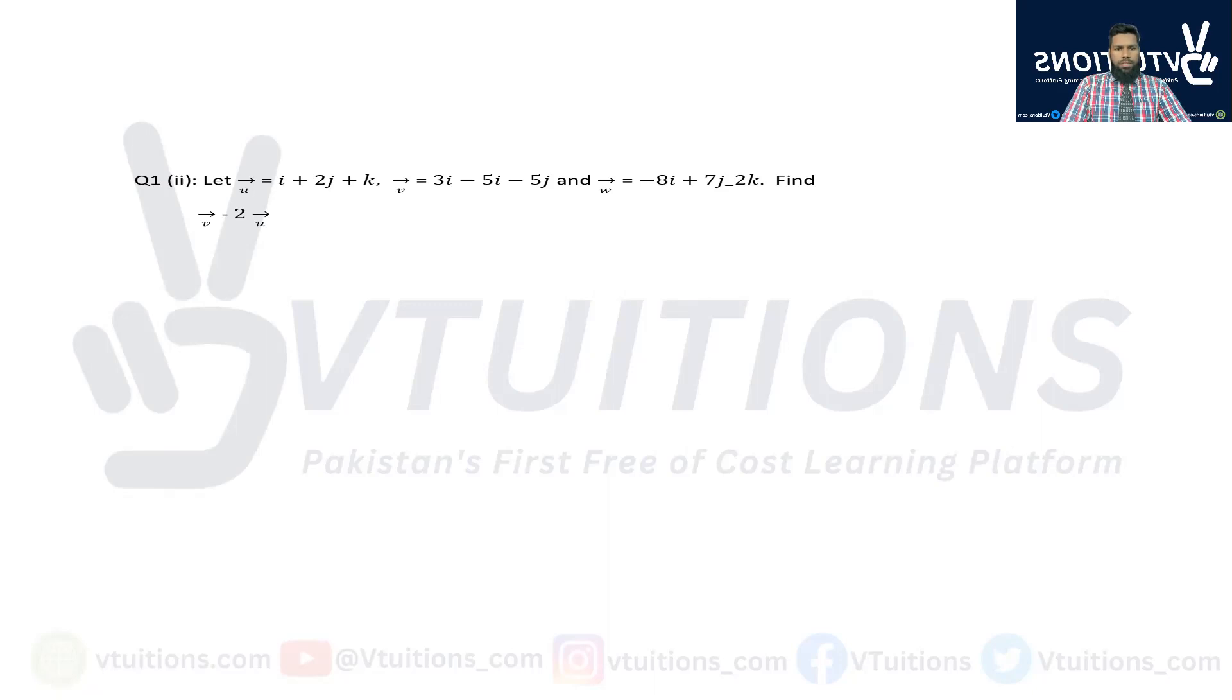Dear students, the problem is: u = 2i + 3j + k, v = 3i - 5j. In this way, w is given. Find v - 2u. To find, we have two vectors, so we have to find v vector minus 2u vector. I will solve this for you. This is a very simple question.